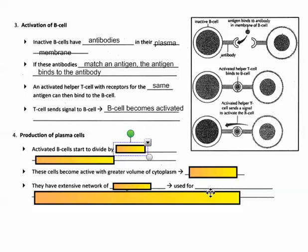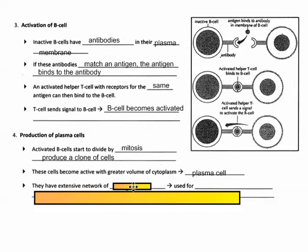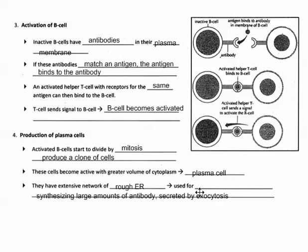The activated B cells start to divide by mitosis and form a clone of cells — we call this clonal selection. The cells get bigger with more cytoplasm and become plasma cells. They have an extensive network of rough endoplasmic reticulum — rough because of ribosomes on the surface — and those ribosomes make proteins. Specifically, they make antibodies, so these plasma cells produce the correct activated antibody.